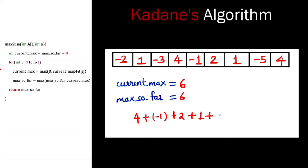Now we add the next element, minus 5. 6 minus 5 becomes 1, so we set current max to 1 and max so far remains 6. Adding the last item, 4: 1 plus 4 is 5, so current max becomes 5 and max so far remains 6. We got the answer as 6, which is the subarray 4, minus 1, 2, and 1. This is how we find the maximum sum subarray using Kadane's algorithm.